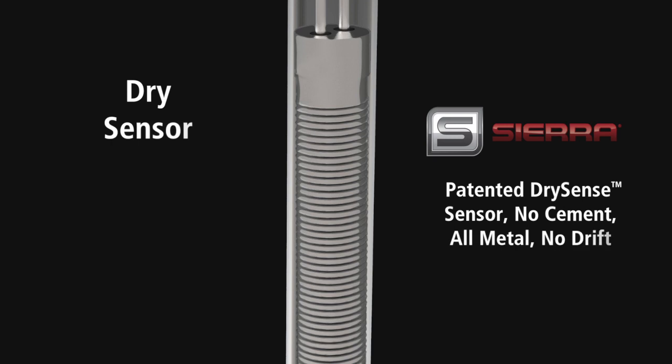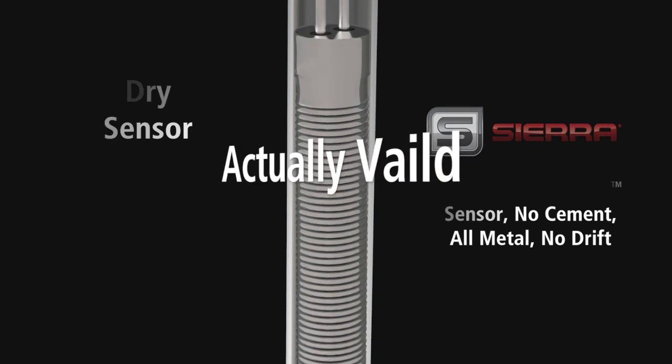Sierra's DrySense All-Metal No-Drift Sensor has a big advantage during in-situ calibration validation. With Sierra's All-Metal DrySense Velocity Sensor you have the mechanical design confidence that there will be no drift and that in-situ calibration validation is indeed actually valid.